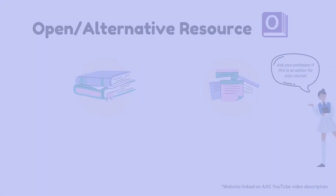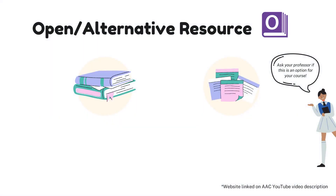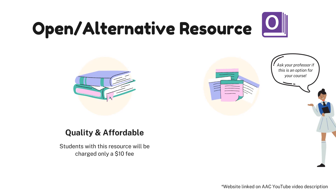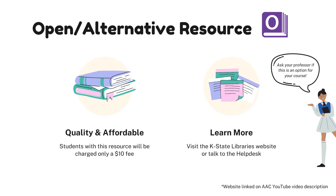Some K-State courses will include an open textbook or alternative resource, which is a quality and more affordable option to renting or purchasing textbooks. If your course has an alternative textbook, you'll see the purple textbook icon with an O. Students enrolled in courses with this option will be charged a $10 fee to receive access to the alternative textbook resources. You can learn more about K-State's open alternative resource initiative at the library's website linked in this video description.